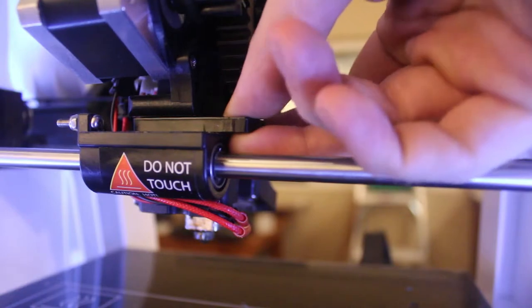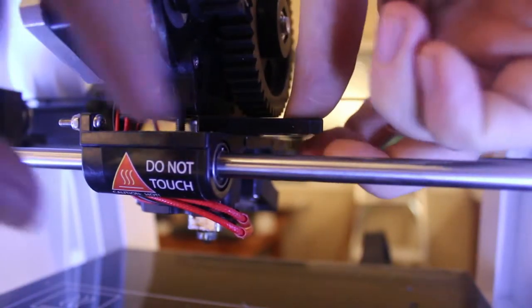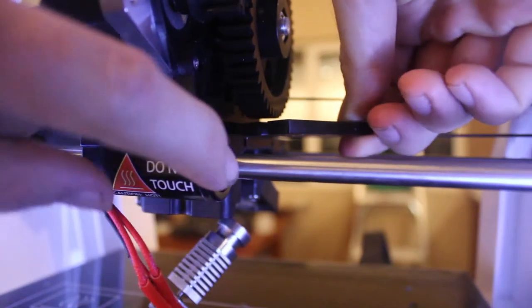Once you have that screw loosened up, there's this little plastic tab that you want to pull out and it will drop the nozzle down. Just like that.